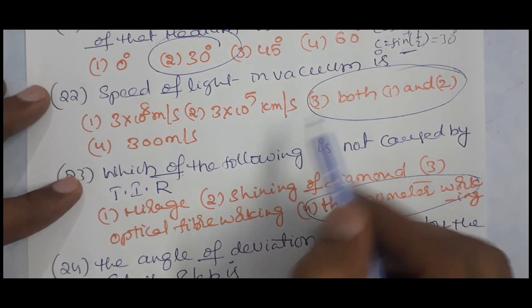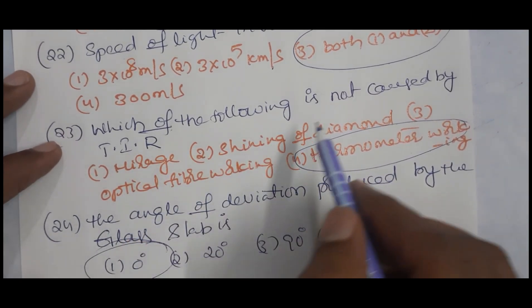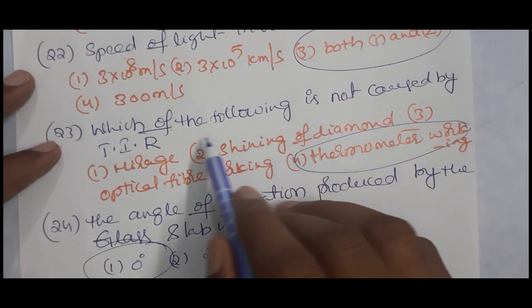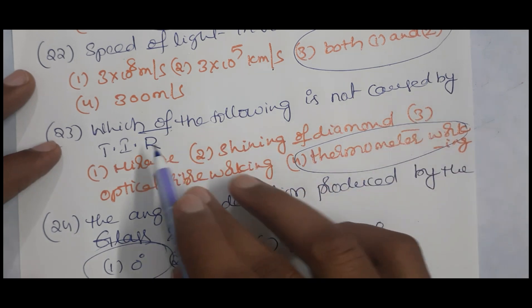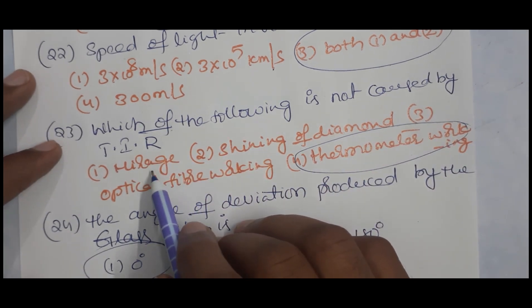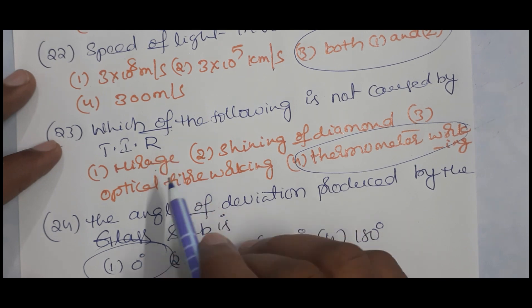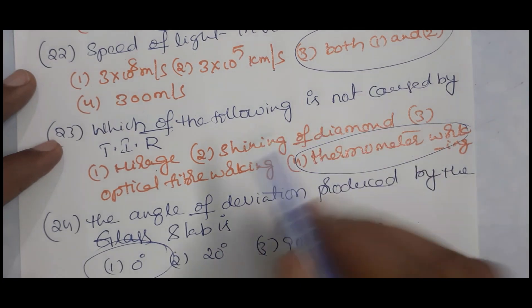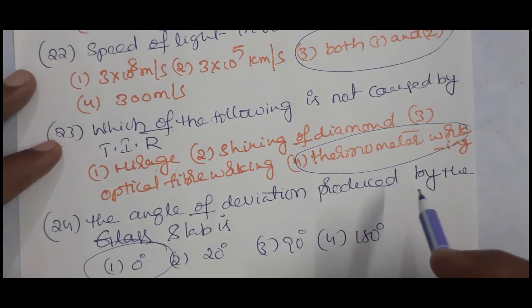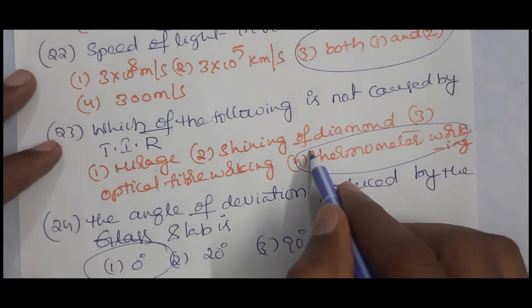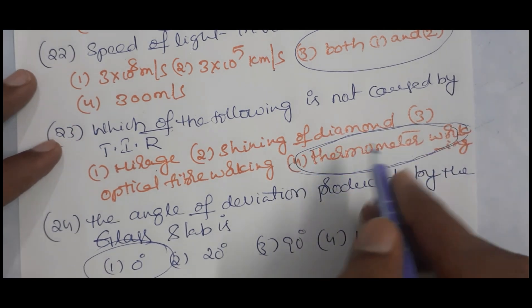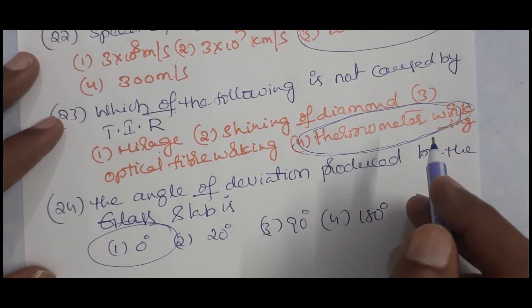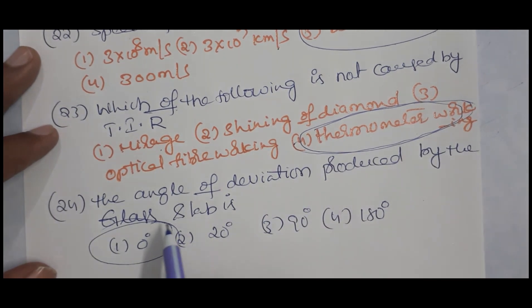The speed of light in vacuum is 3 × 10⁸ meters per second, also written as 3 × 10⁵ kilometers per second. Mirrors, the shining of diamond, and optical fibers work on the principle of total internal reflection, but a thermometer does not. The angle of deviation produced by a glass slab is 0 degrees.